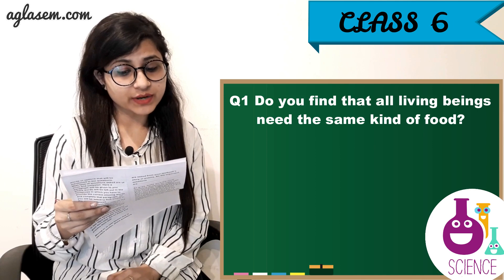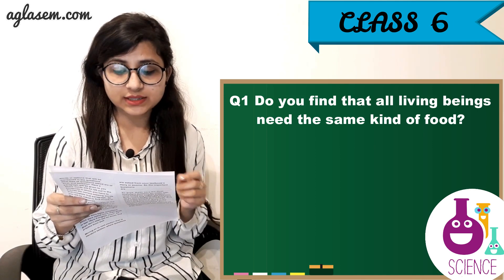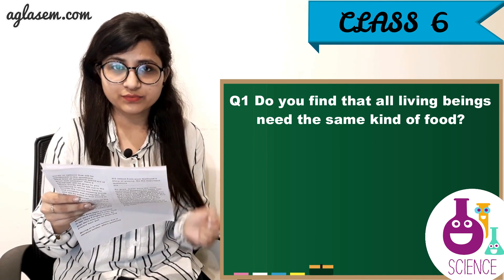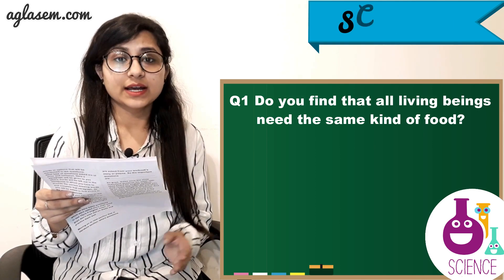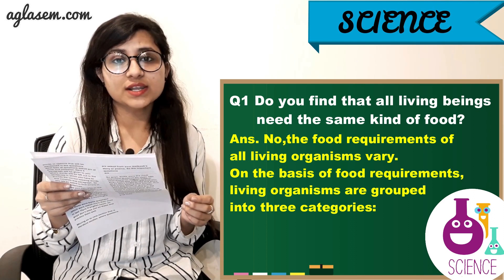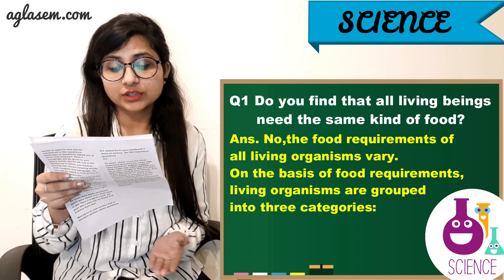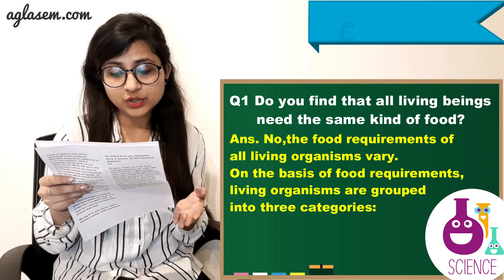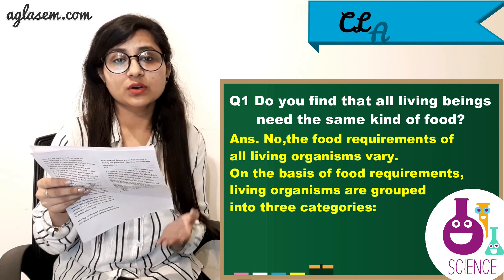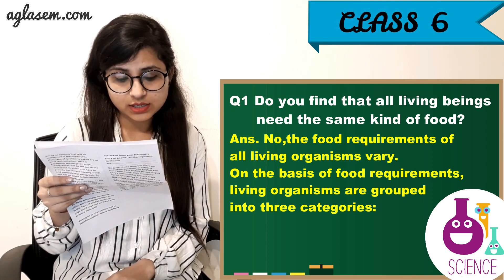Turn to page 6. Question number 1: Do you find that all living beings need the same kind of food? The answer is no. The food requirements of all living organisms vary. On the basis of food requirements, living organisms are grouped into 3 categories.